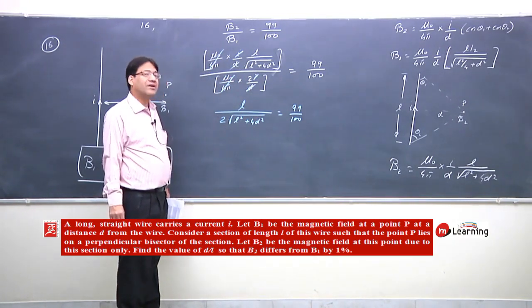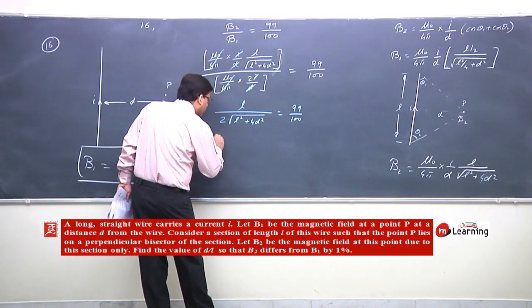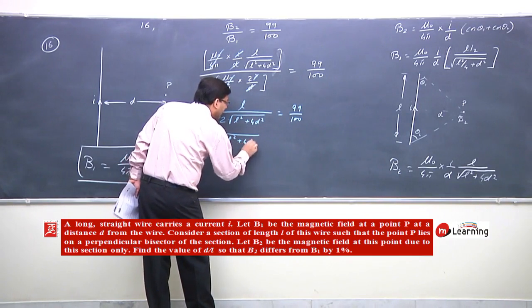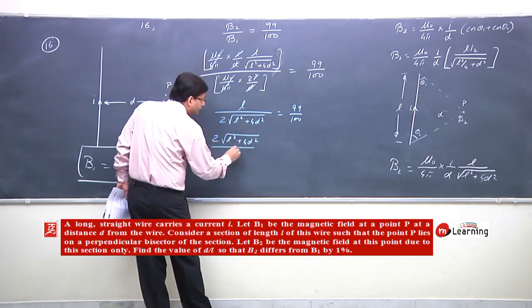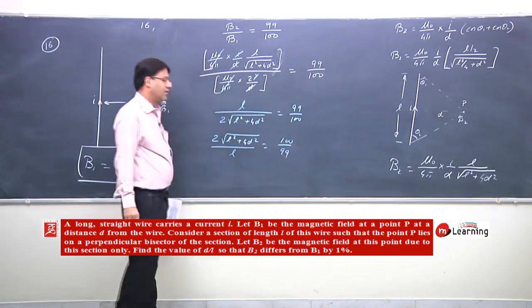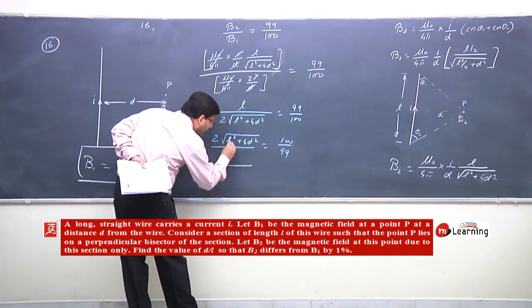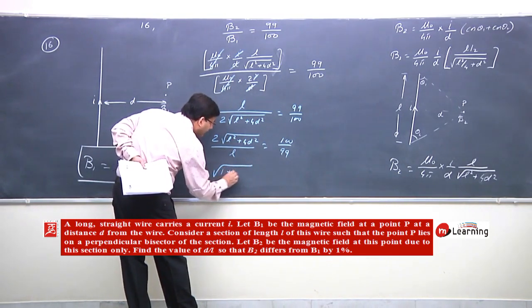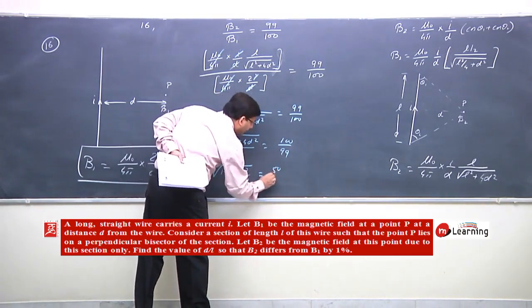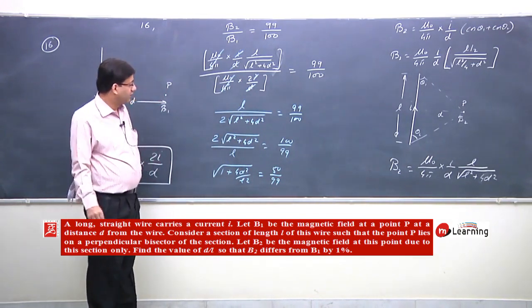Rearranging: 2√(L² + 4D²) / L = 100/99. Dividing through by L: 2√(1 + 4D²/L²) = 100/99... wait, taking L inside gives: √(1 + 4D²/L²) = 50/99.